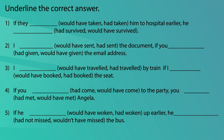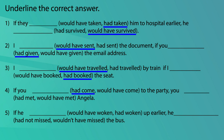I will read the sentences one by one with the answers. "If they had taken him to hospital earlier, he would have survived." "I would have sent the document if you had given the email address." "I would have travelled by train if I had booked the seat." "If you had come to the party, you would have met Angela." "If he had woken up earlier, he wouldn't have missed the bus."